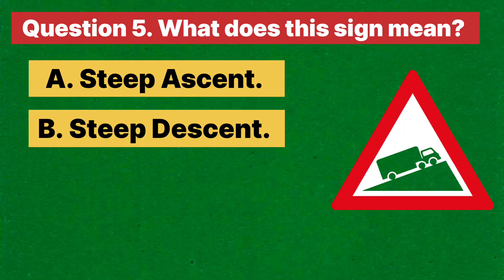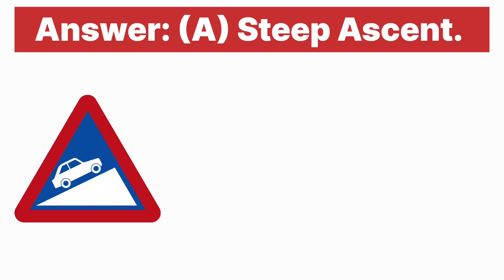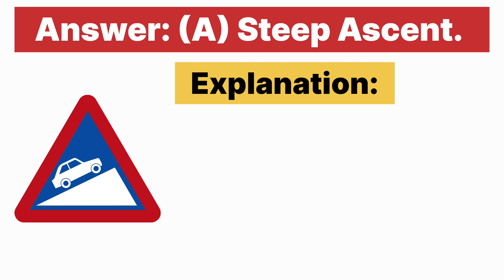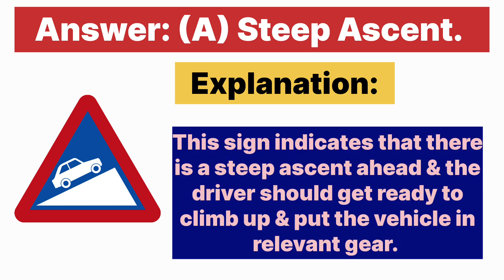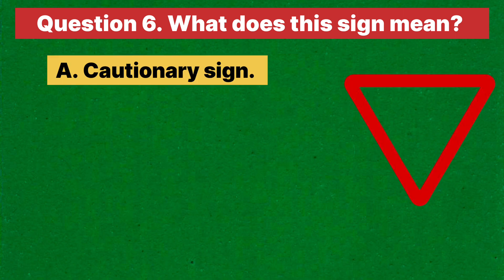Question five: What does this sign mean? A. Steep ascent. B. Steep descent. C. Dangerous deep. D. Height limit. Answer is A, steep ascent. Explanation: this sign indicates that there is a steep ascent ahead and the driver should get ready to climb up and put the vehicle in the relevant gear.